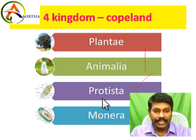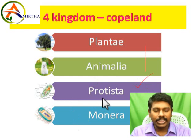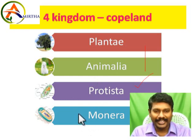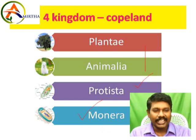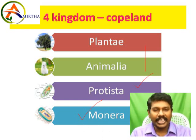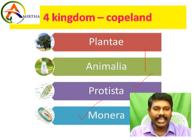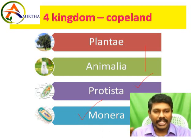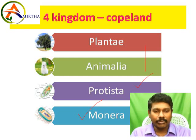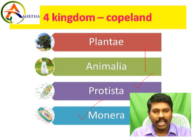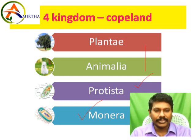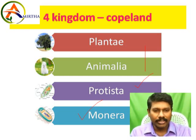And then Protista was split: bacteria, eubacteria, archaebacteria — all these formed the different Monera kingdom. Now you can see the Whittaker Five Kingdom concept. That is Fungi as a separate kingdom, based on cell wall structure. The cell wall is distinct, so ultimately it became a new kingdom. Now the five kingdom concept has emerged.